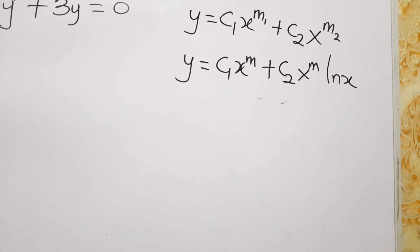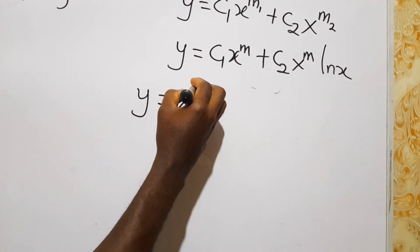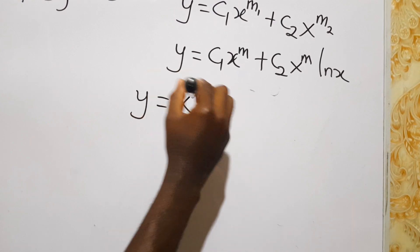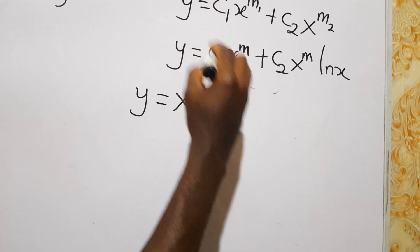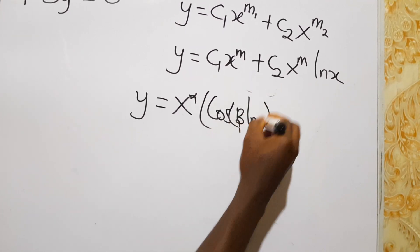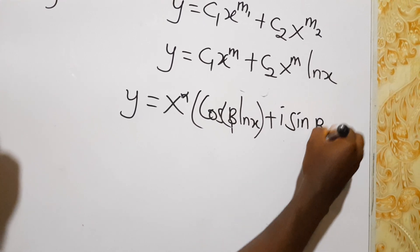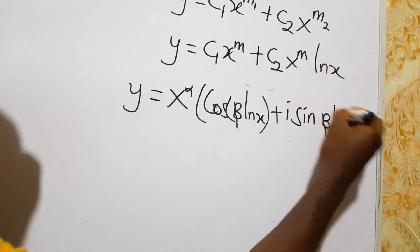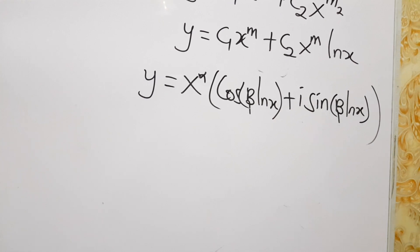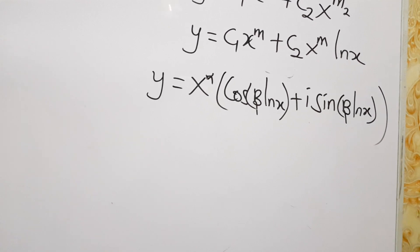When m is a complex root, then y equals x^alpha times the quantity c1·cos(beta·ln x) plus c2·i·sin(beta·ln x), where alpha is the real part of the complex root and beta is the imaginary part.